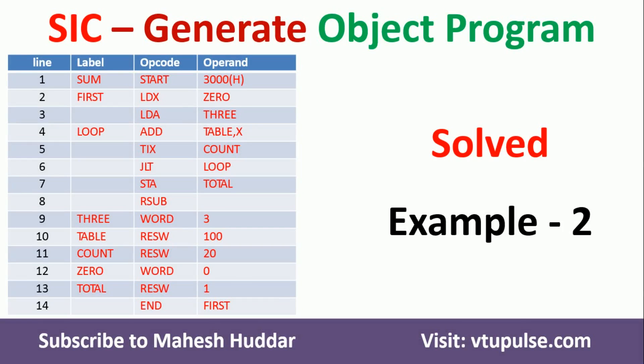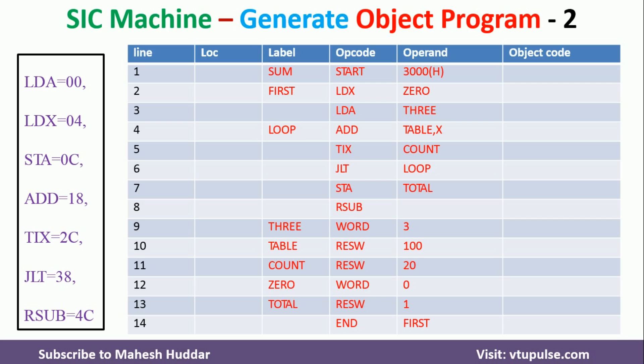Hi, welcome back. In this video, I will discuss how to convert an assembly language program to an object program in SIC machine. This is solved example number 2. The link for other solved examples is given in the description below.